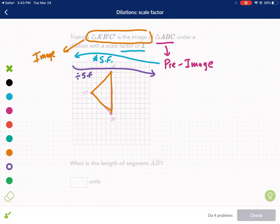So our scale factor is 2. So that means we're going to take each length and we are going to divide by 2. Now, we're only asked to find the length of AB. So the length of A'B', we're just going to count. 1, 2, 3, 4, 5, 6, 7, 8.